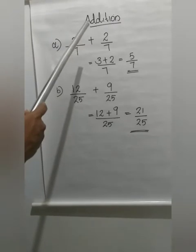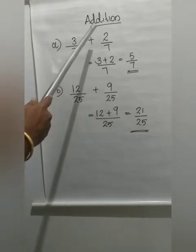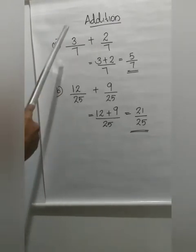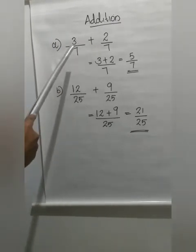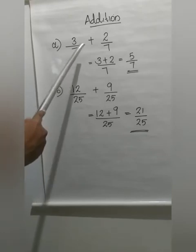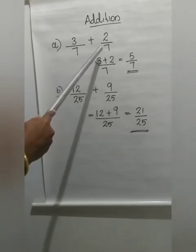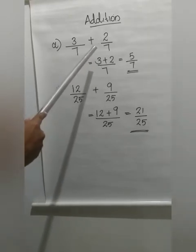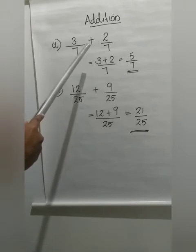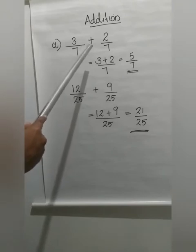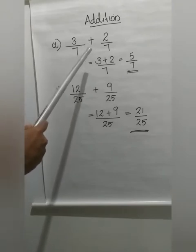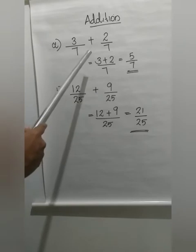Now we will discuss some examples on addition of fractions. Here is the first question: 3 by 7 plus 2 by 7. By looking at this fraction, what can you understand? What type of fraction is this? You have studied two types of fractions. What are they?